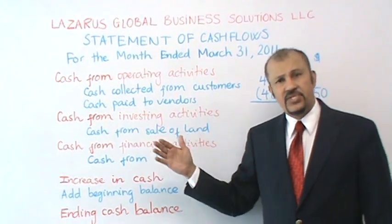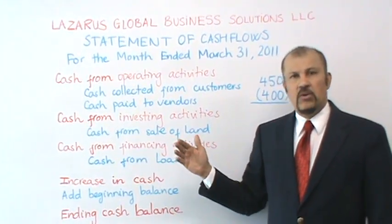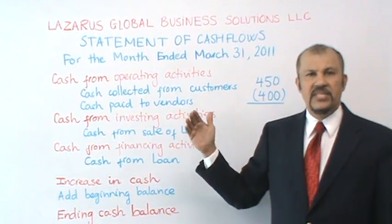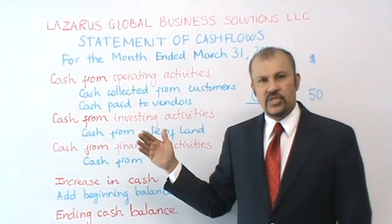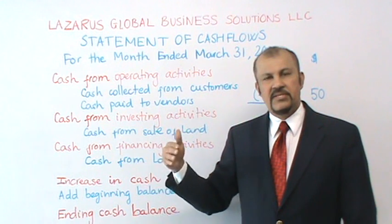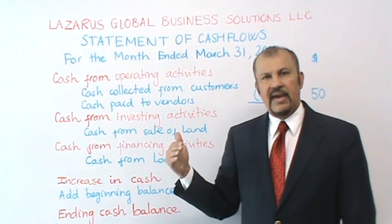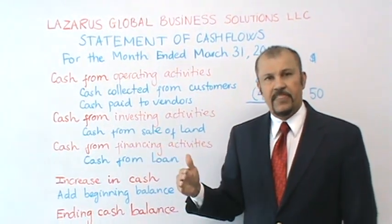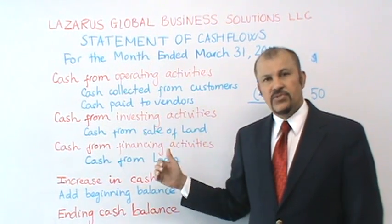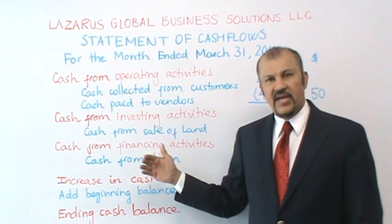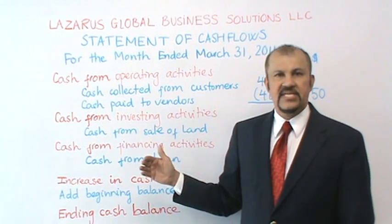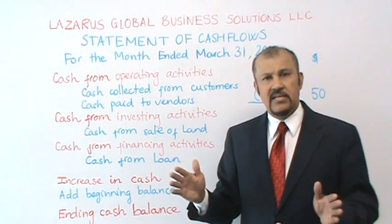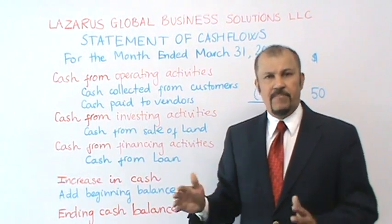What's the difference between the two methods? The main difference is in the operating activity section — the way we calculate the numbers there is different under the two methods. However, the remaining two sections, the investing activities and the financing activity section, are identical in all respects under both methods.